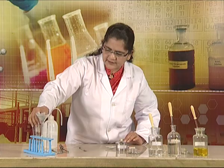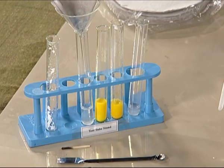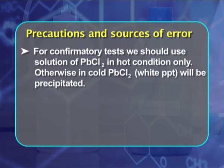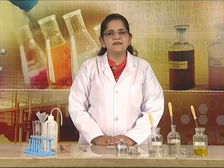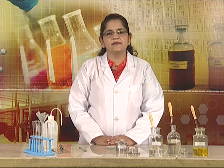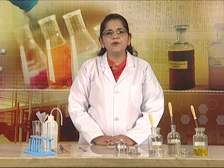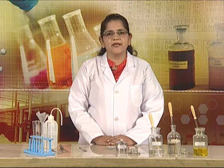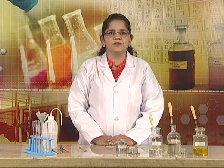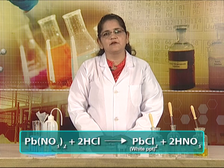These two tests confirm the presence of lead ions. As a precaution, for the confirmatory test, we should use the solution of lead chloride in hot condition only. Otherwise, in cold conditions, lead chloride will be precipitated. The presence of lead ion in the analysis of group 1 is tested by preparing the original solution of lead salt in distilled water. Dilute HCl, being the group reagent, is added to the original solution, and we get a white precipitate of lead chloride.